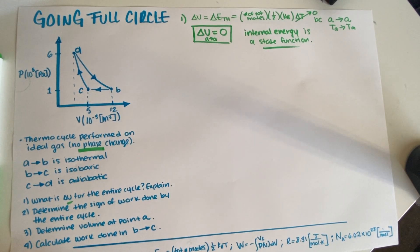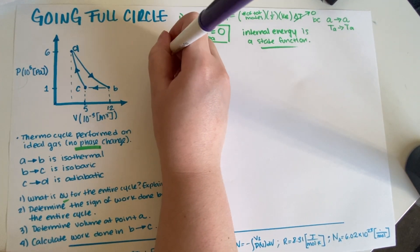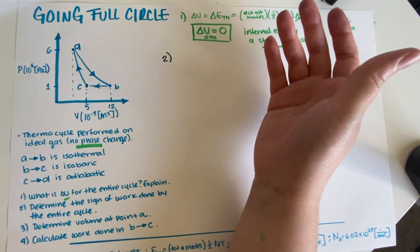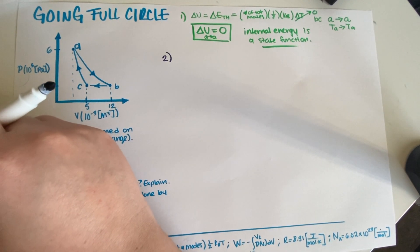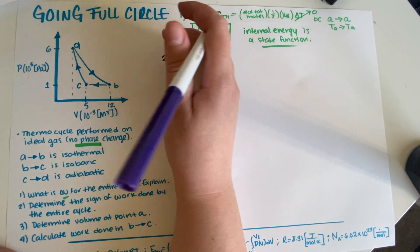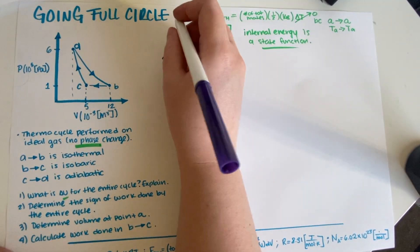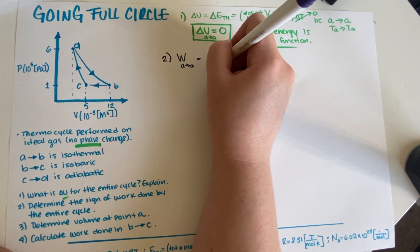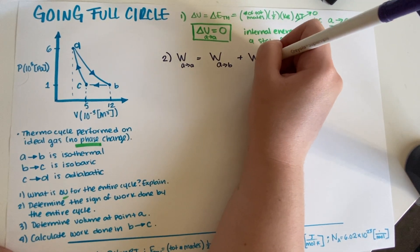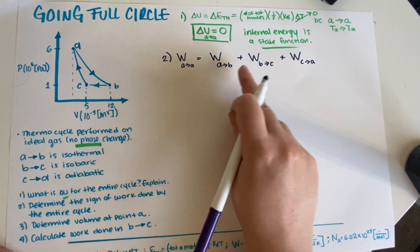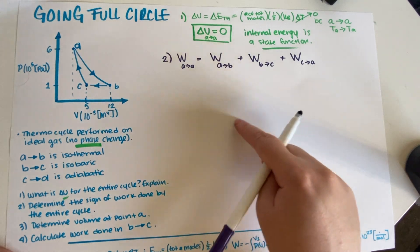Now for part B, we have to determine the sign of work done by the entire cycle. So your work going from A to A equals work from A to B, plus work from B to C, plus work from C to A — adding them up gives you the entire cycle. Now in terms of positive versus negative, we have to remember that work is positive if you have a decrease in volume, and negative if you have an increase in volume.